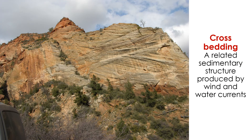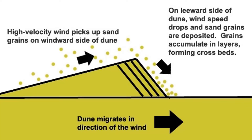Crossbedding is a related sedimentary structure. Crossbeds also form under wind and water currents. These structures form because dunes and ripples migrate over time. Once a sand grain is blown to the top of a dune, it may fall on the downwind side of the peak. Over time, more grains will join in and the dune will migrate in the direction of wind. Crossbeds track the movement of the structure in the direction of wind.